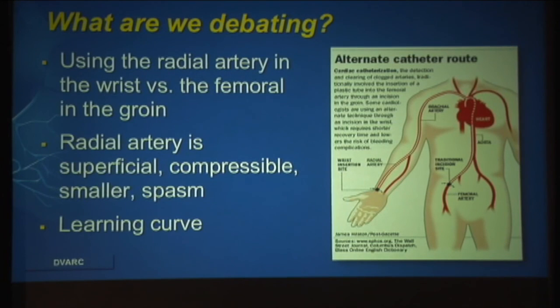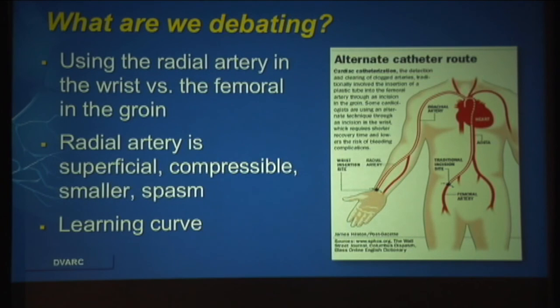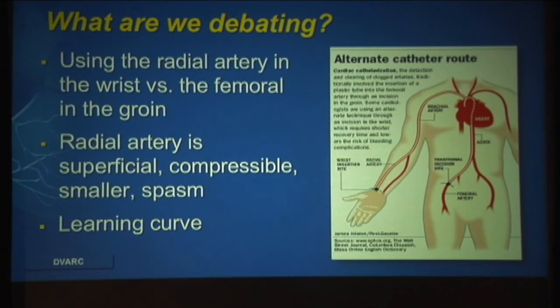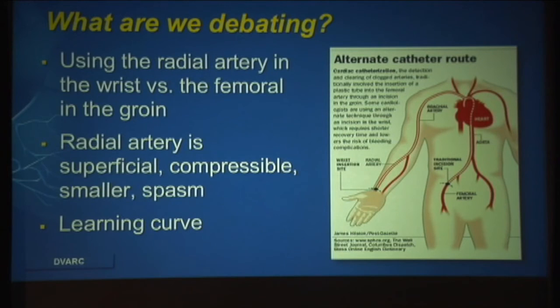So what are we really debating? Using the radial artery — the artery in the wrist — versus the femoral artery, which is in the groin. The radial artery in your wrist is very superficial, right under the skin, and is easily compressible. However, it can easily spasm and is very small, so there is a learning curve to the use of radial access.